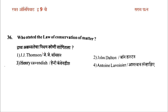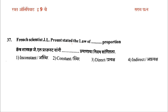The question is: who stated the law of conservation of matter? Options are J.J. Thompson, John Dalton, Henry Cavendish, Antoine Lavoisier. The answer: French scientist J.L. Proust stated the law of definite proportions. The word 'constant' means fixed or still; 'direct' means to protect.